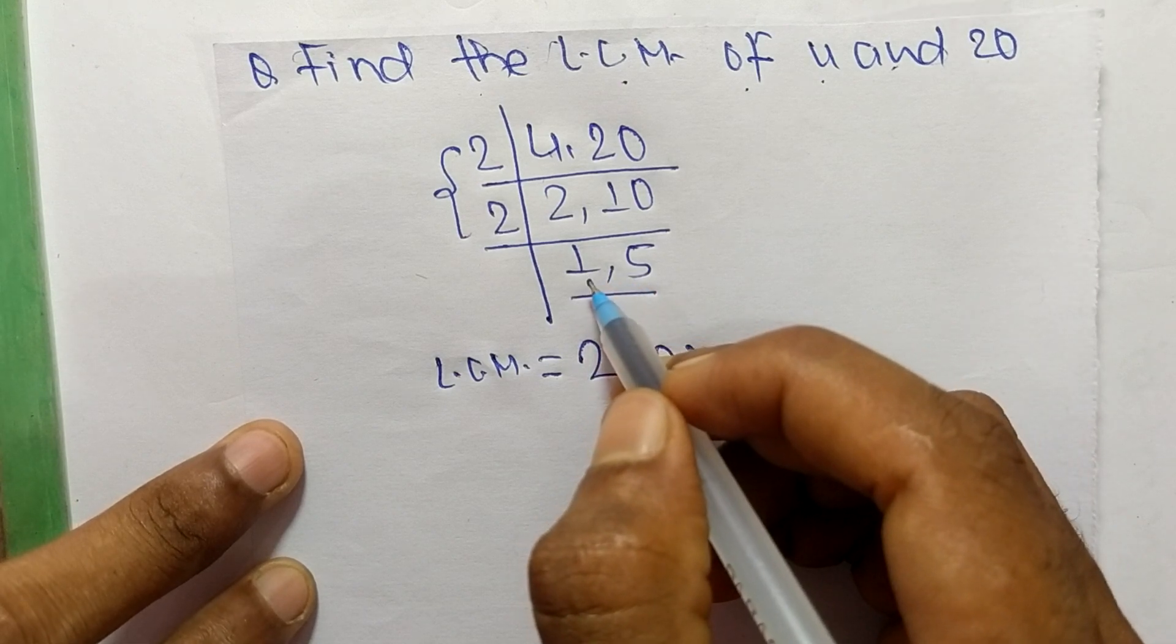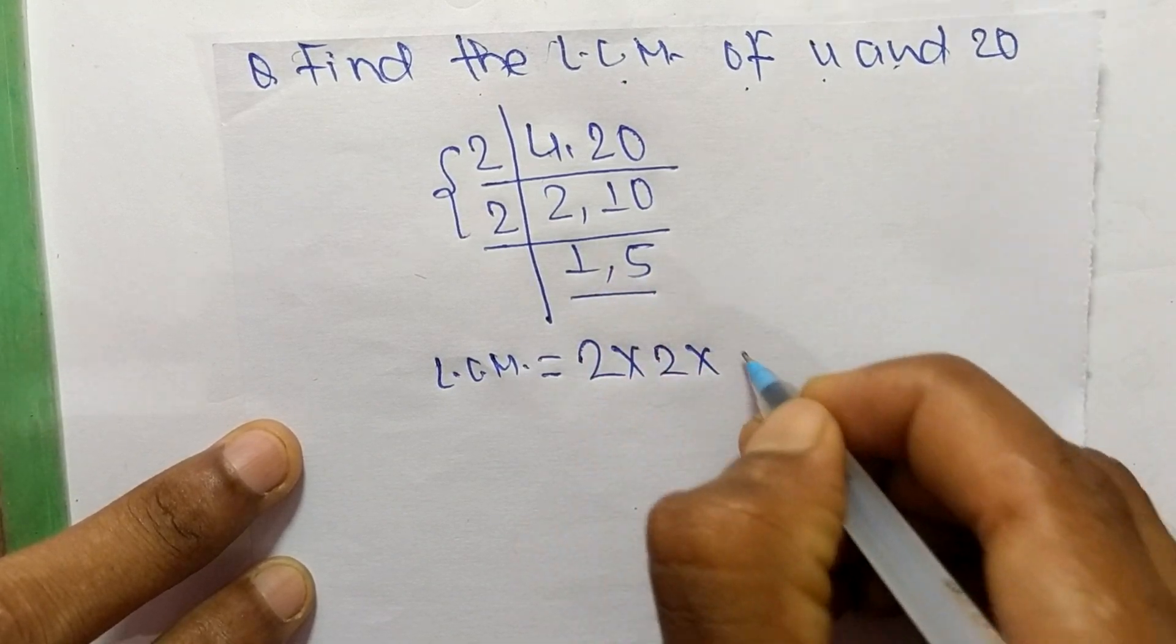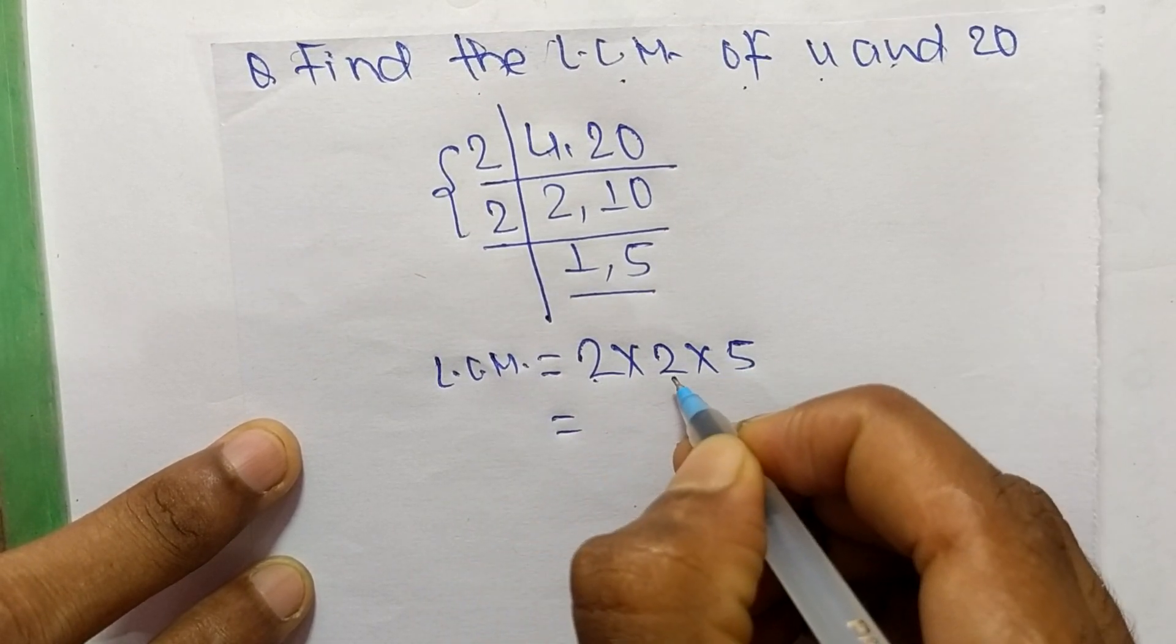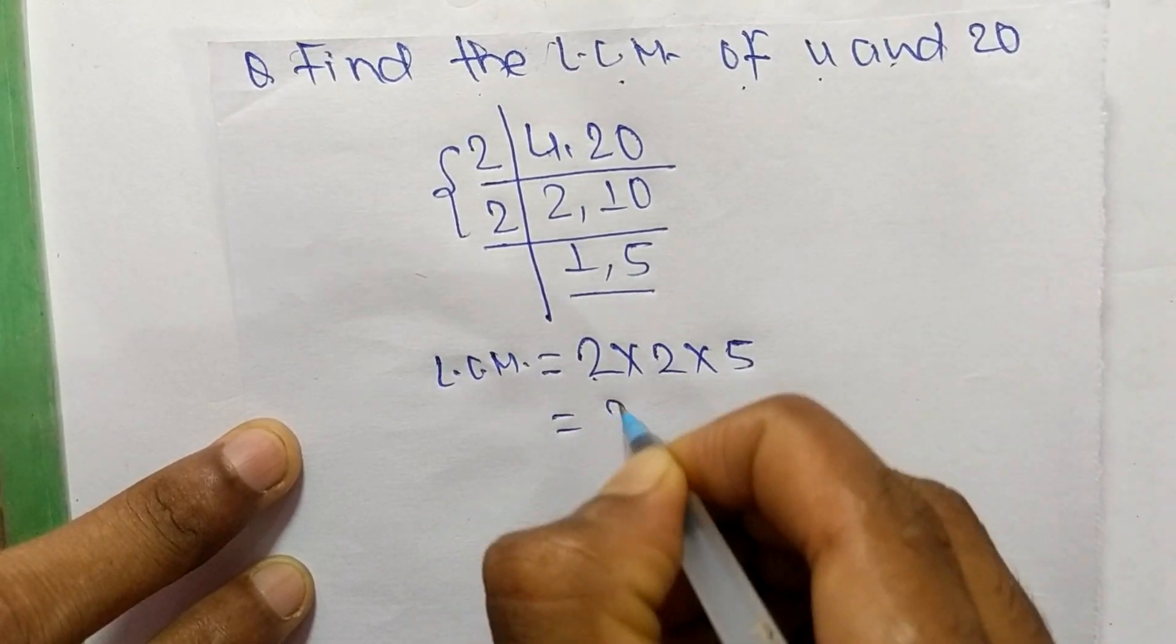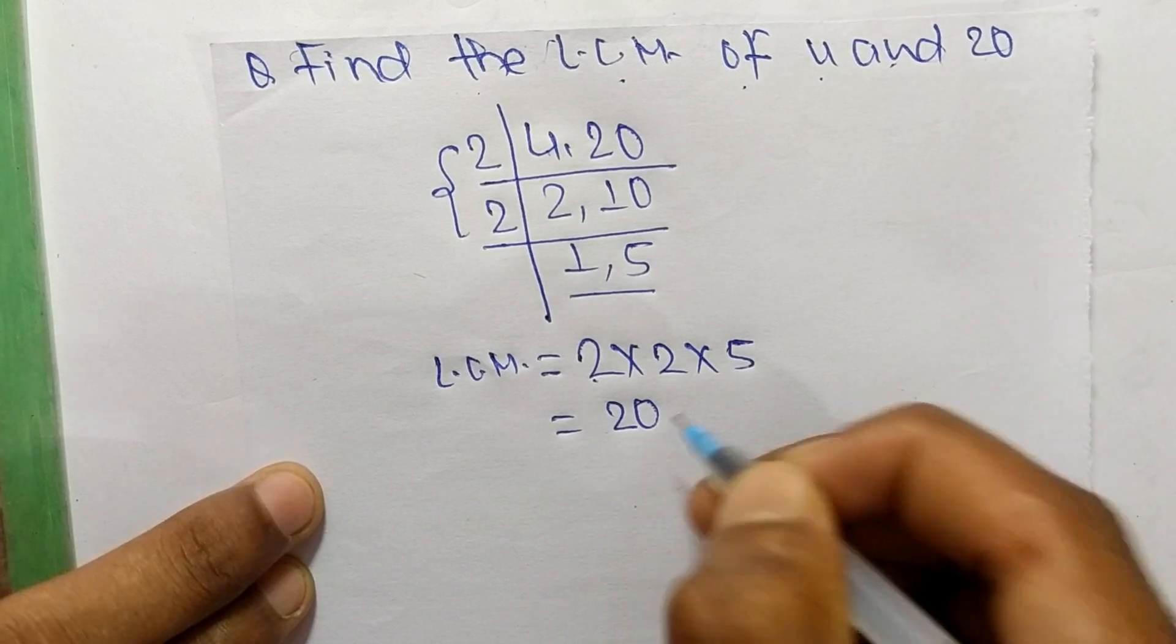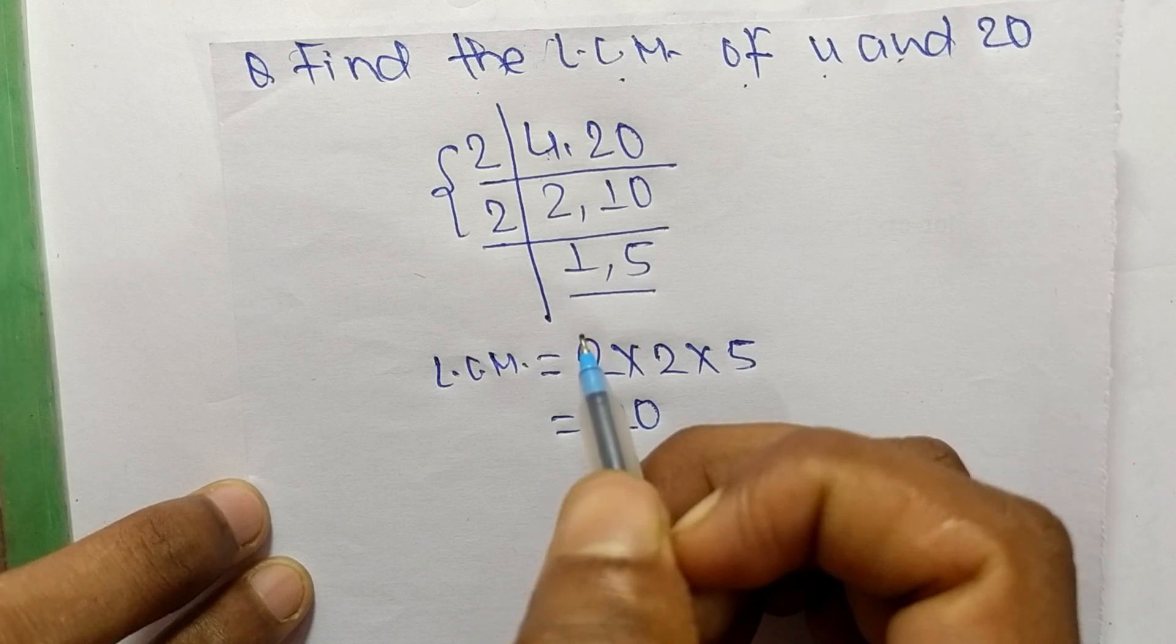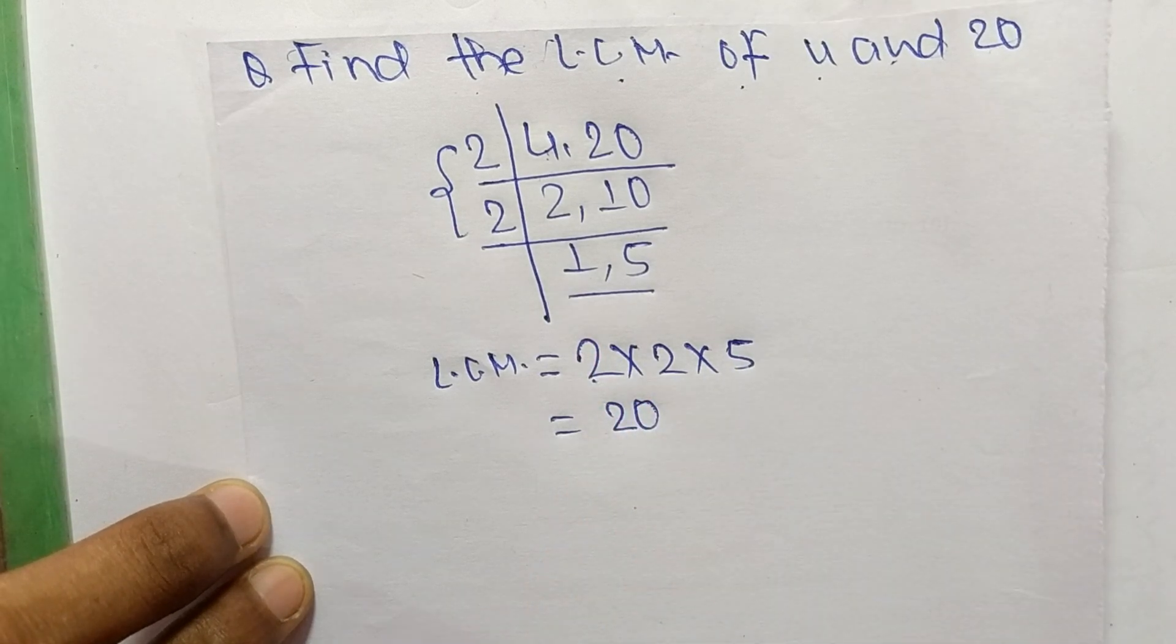So from this part we take 5, so it is 2 times 2 means 4, and 4 times 5 means it is 20. So 20 is the LCM of 4 and 20. So this much for today and thanks for watching.